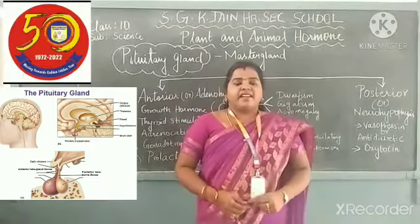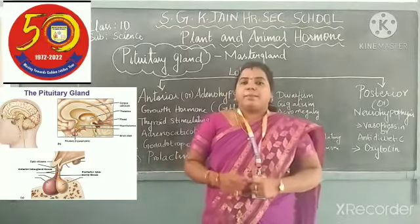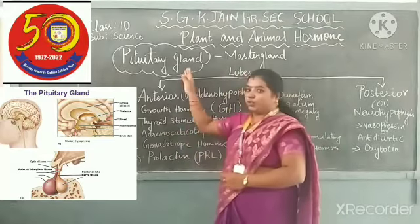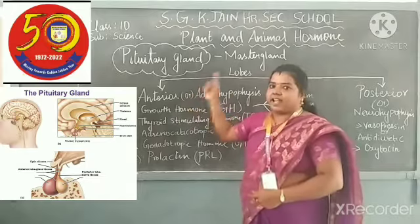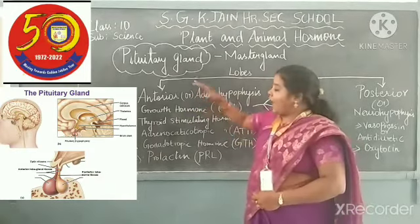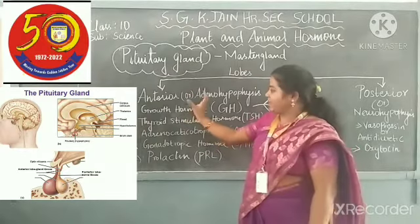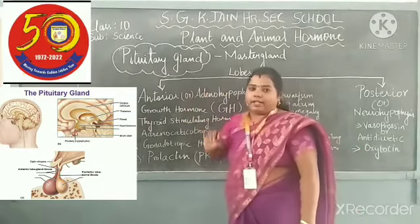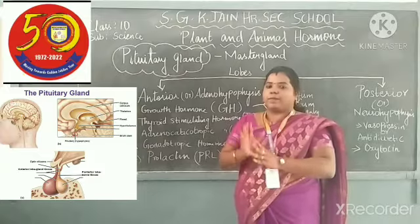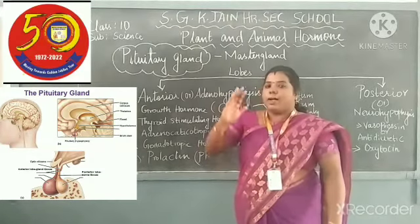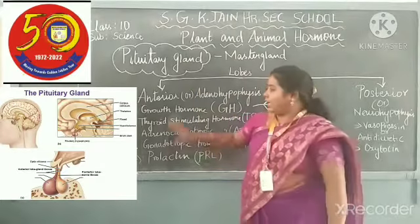Today, for the 10th standard, I am going to explain the lesson on Glands and Animal Hormones. In the previous video, we discussed about the pituitary gland and the types of lobes — the anterior as well as the posterior lobe. Anterior lobe means the lobe present in the front portion, and posterior means the lobe present near the back portion.